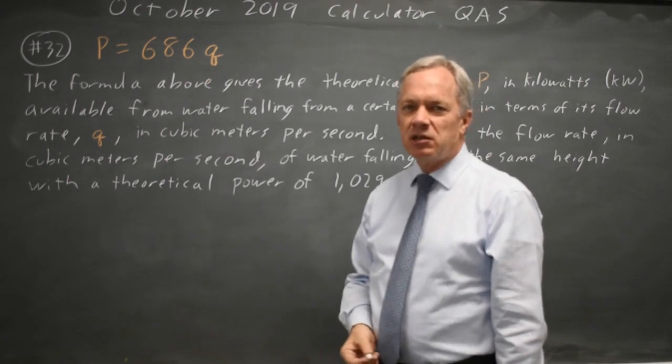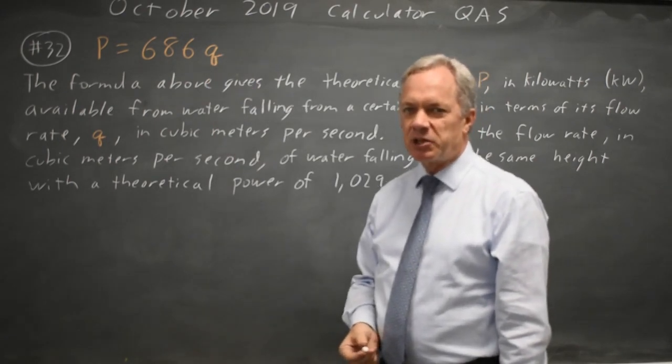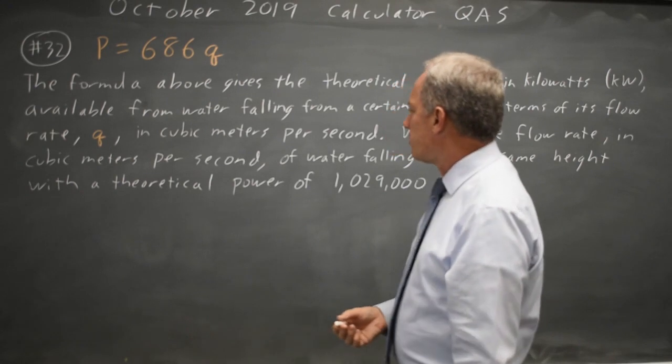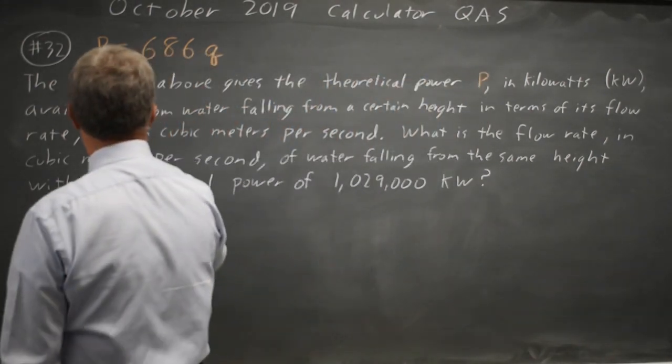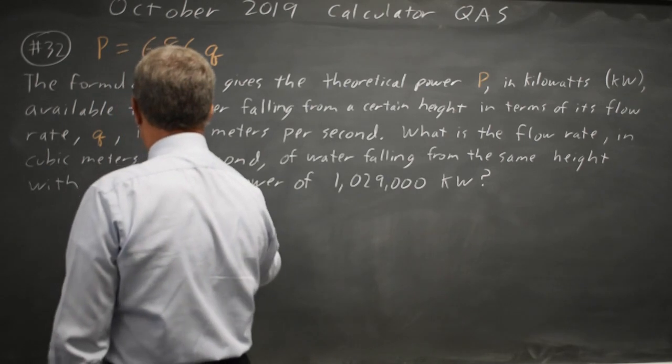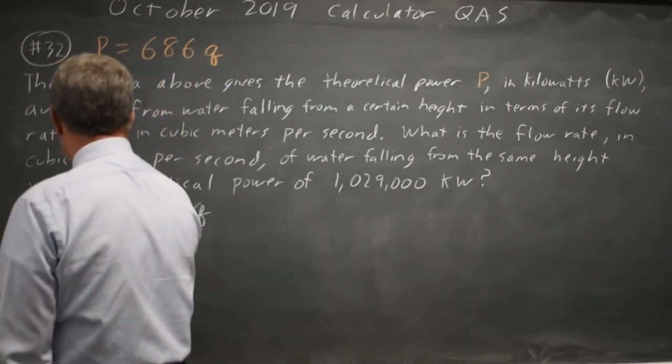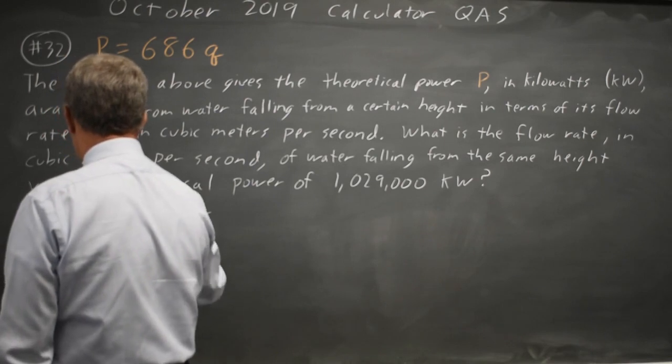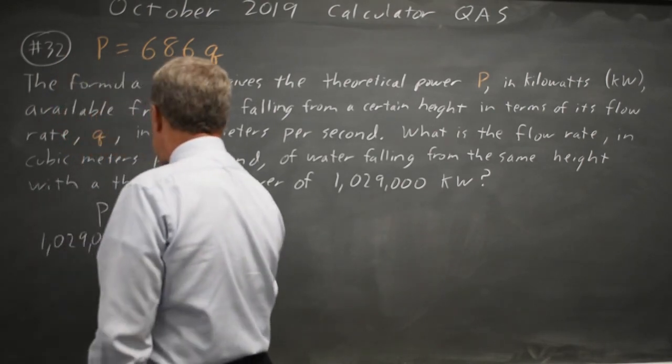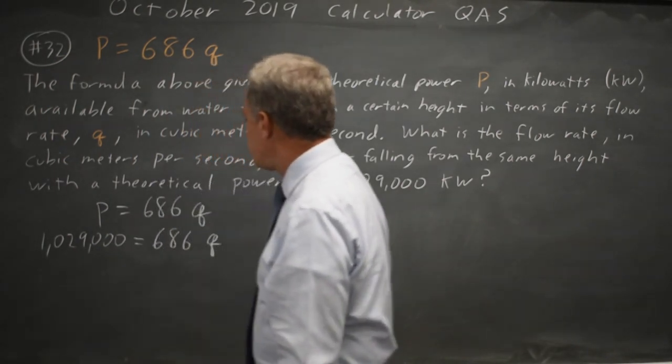You do have to check that both with College Board and in general, but the units match so we don't have to worry about units. So we have power equals 686 times flow rate, and power is 1,029,000 equals 686q, and we're solving for q.